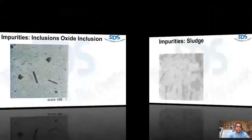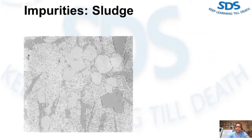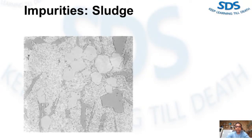The term sludge refers to the occurrence and formation of intermetallic compounds in the melt that contain heavy metals: iron, manganese, and chromium. These sludge particles are extremely hard, therefore creating hard spots during machining which usually cause tool breakage. This figure shows sludge particles in alloy microstructure — usually blocky and polyhedral in shape.